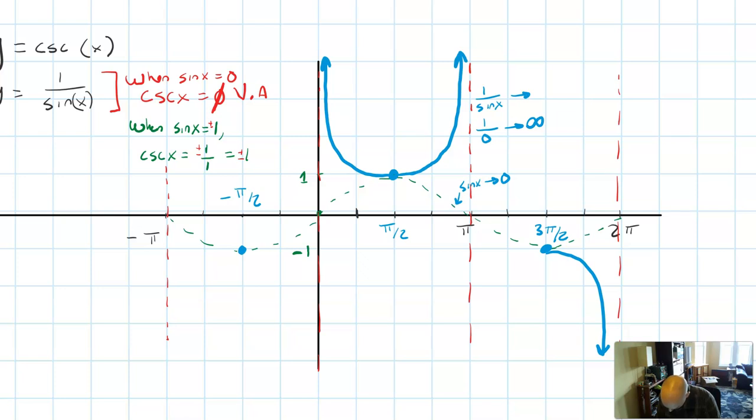But because we have a negative 1, we're approaching negative 1 over 0, which is going to approach negative infinity.